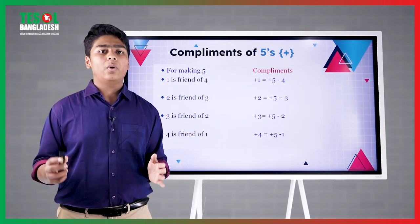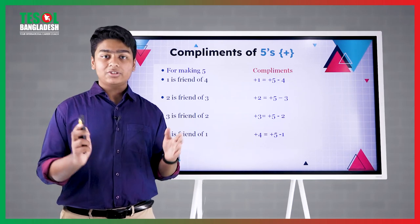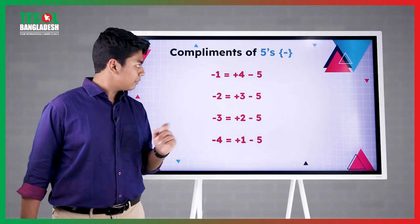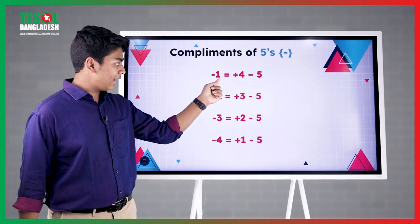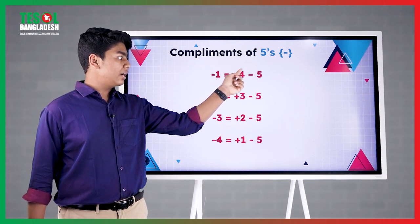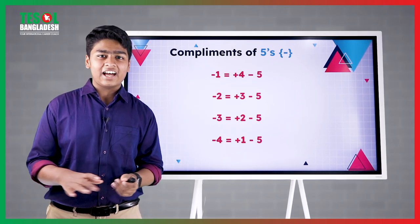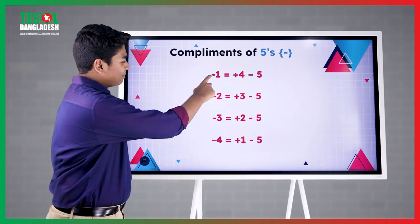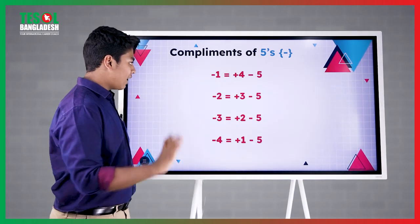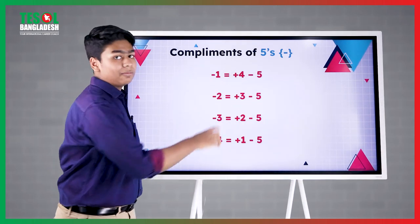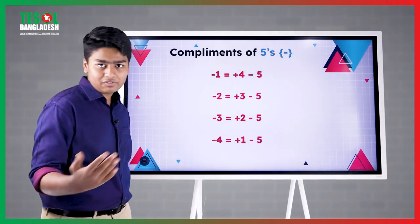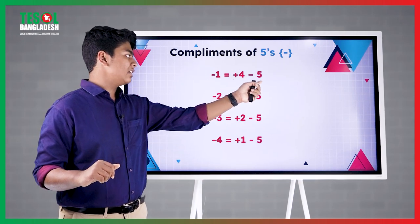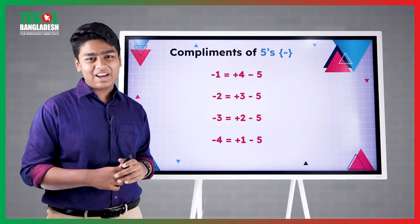Just remember, when it's plus, the captain will come to your rescue. But what about minus? Minus — here you see, we have minus 1 equals to plus 4 minus 5. This time the story is just the opposite. Minus 1 equals to plus 4, so now the friend is coming to rescue and the captain is sacrificing. So 1's friend is 4, and 5 is the captain — this time, he has to sacrifice.